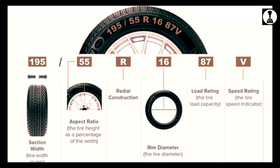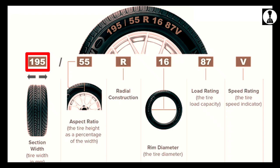For example, this tire is 195 by 55 R16-87V. Here, 195 is section width in millimeters. 55 is aspect ratio — the tire section height indicates 55% of 195 millimeters.